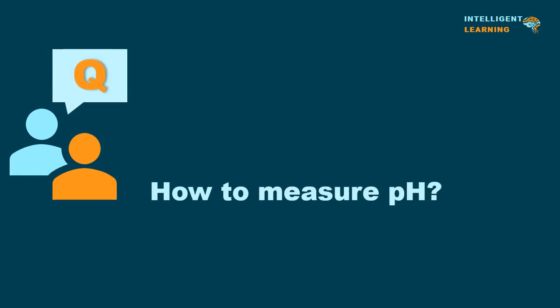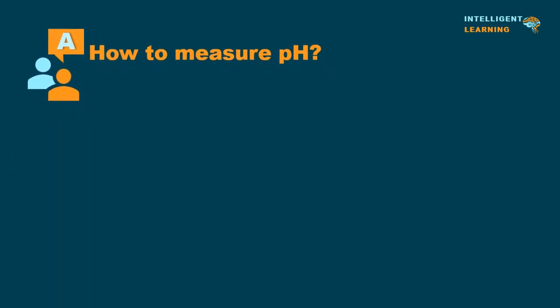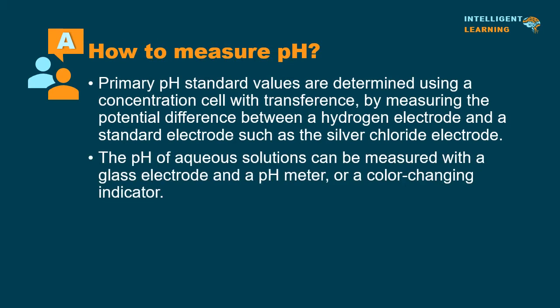How to measure pH? Primary pH standard values are determined using a concentration cell with transference, by measuring the potential difference between a hydrogen electrode and a standard electrode such as the silver chloride electrode. The pH of aqueous solutions can be measured with a glass electrode and a pH meter, or a color-changing indicator.